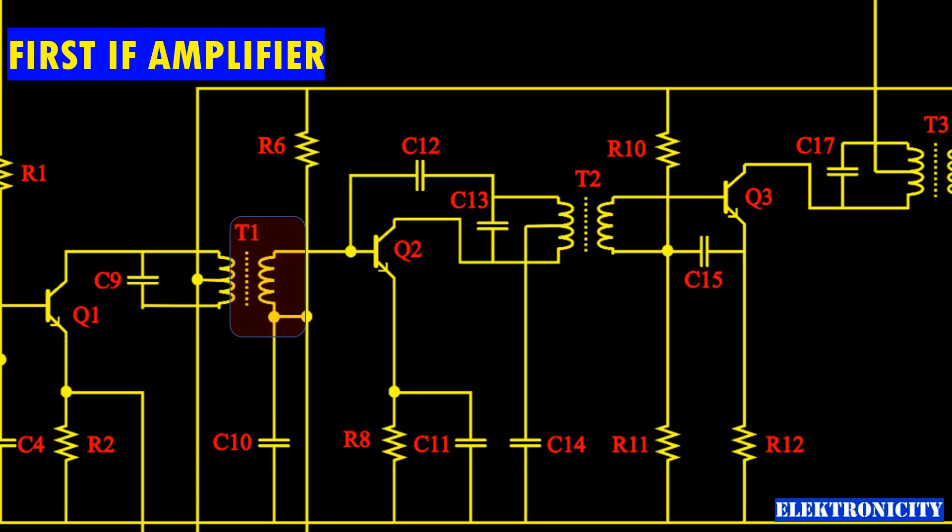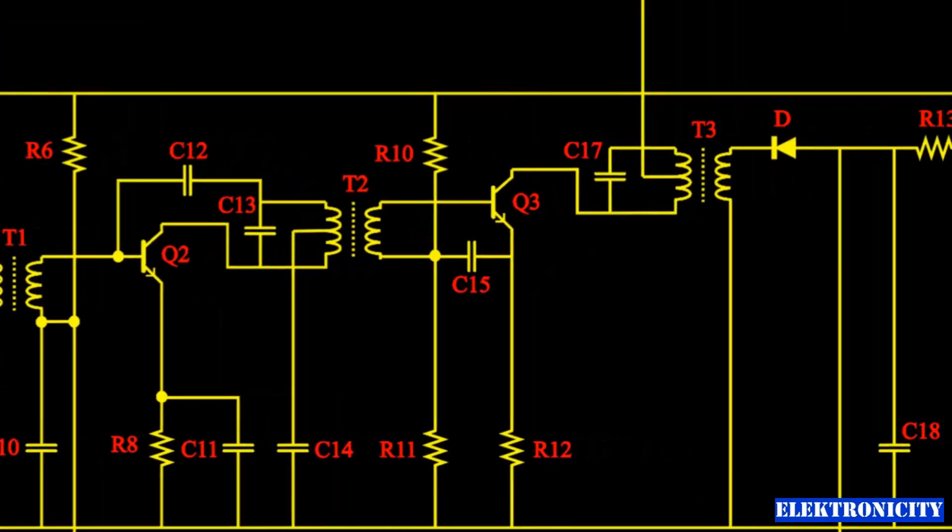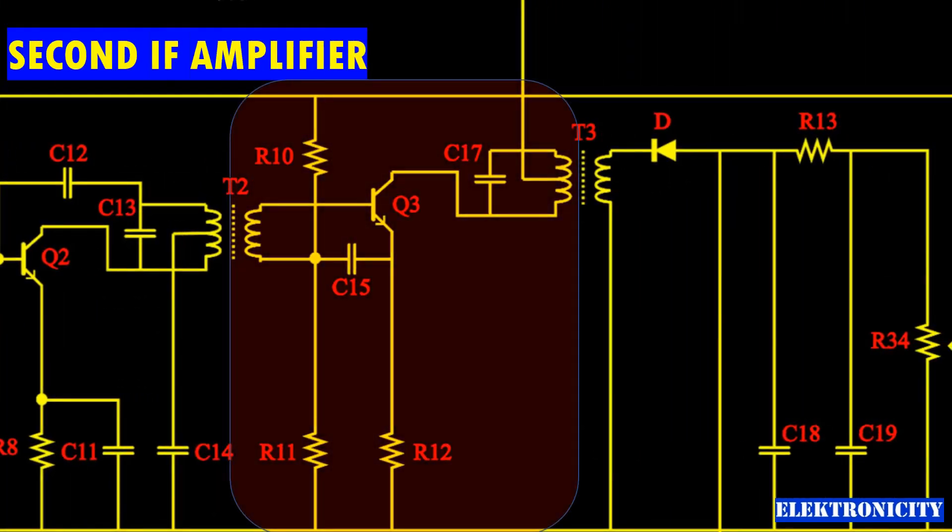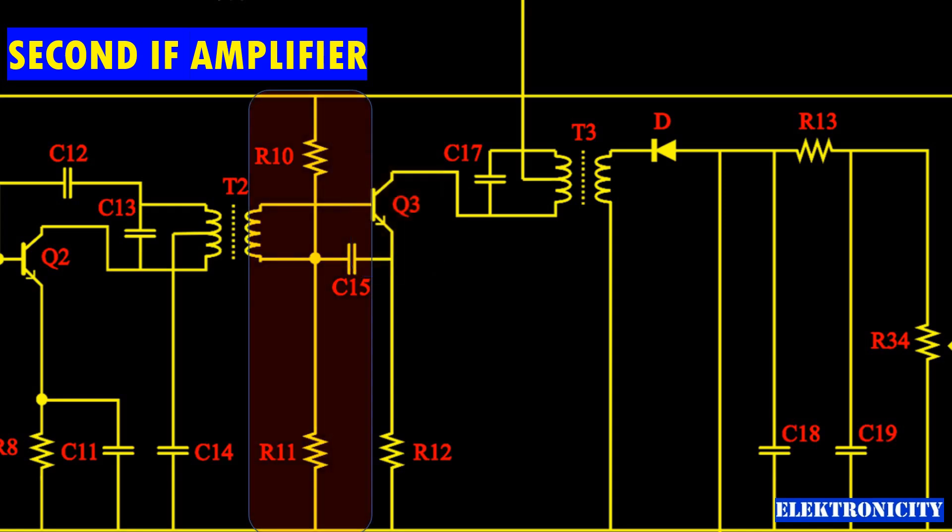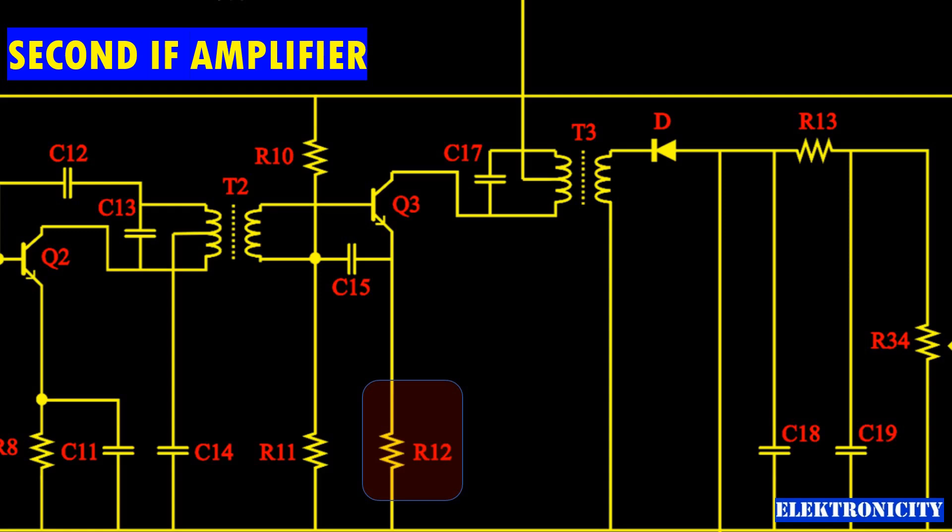Second IF amplifier: this stage consists of transistor amplifier Q3. The bias is stabilized by R10 and R11, with C15 grounding the base for IF signals. R12 provides a negative feedback, reducing distortion. All other aspects are similar to the first amplifier.